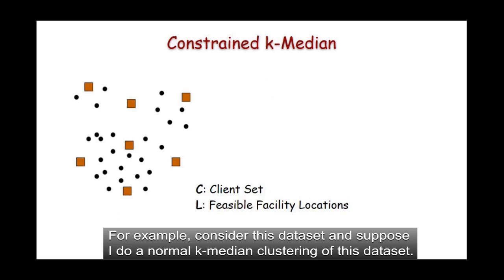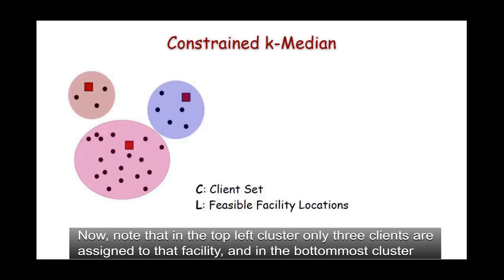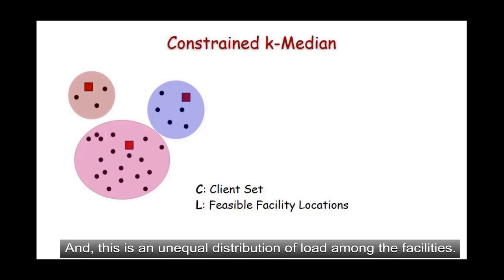For example, consider this dataset. And suppose I do a normal k-median clustering of this dataset, then I will obtain the clusters like this. Now, note that in the top left cluster, only three clients are assigned to that facility. And in the bottom most cluster, many clients are assigned to that facility. And this is an unequal distribution of load among the facilities.